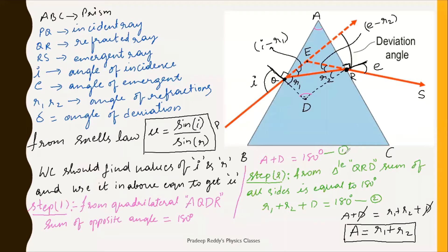In step two, I take triangle QRD. From this triangle, the sum of the three angles must equal 180 degrees. The three angles are r1, r2, and D. So r1 plus r2 plus D equals 180 degrees. This is equation number two.